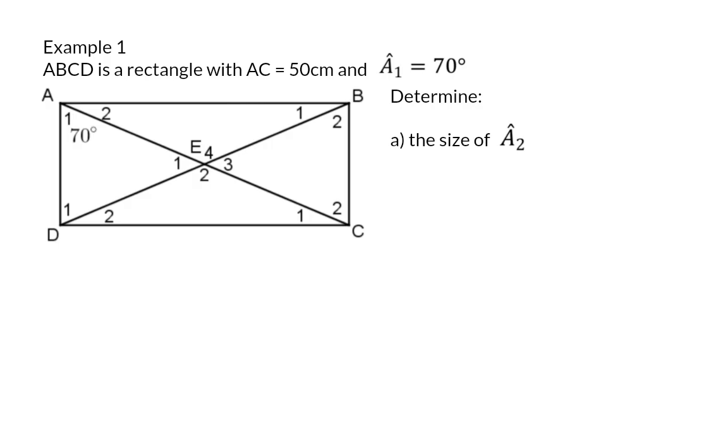Example 1. ABCD is a rectangle with AC equal to 50 cm, that is the diagonal, and angle A1, 70 degrees. The first question, determine the size of angle A2.